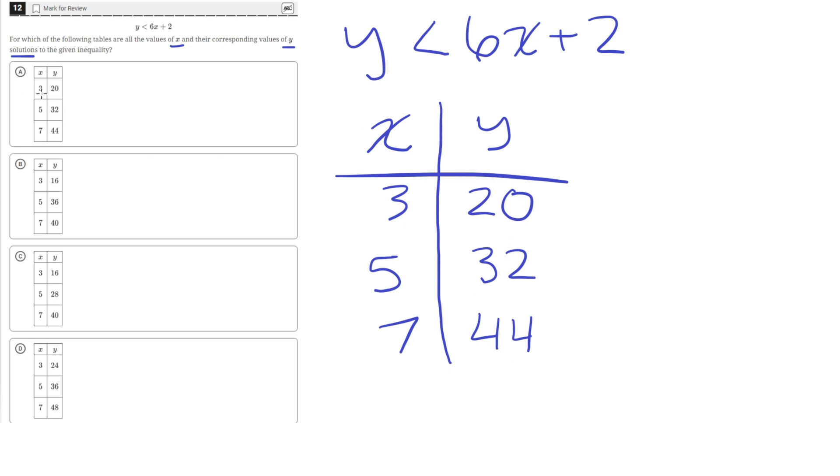So answer choice A says that an x value of 3, y is 20. So 20 is not less than 20, so answer choice A is wrong, since y has to be less than 20 at an x value of 3.